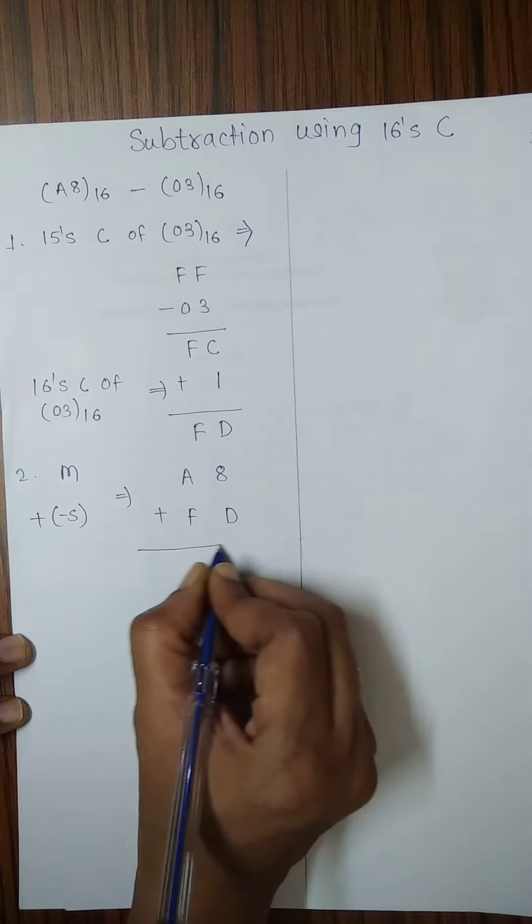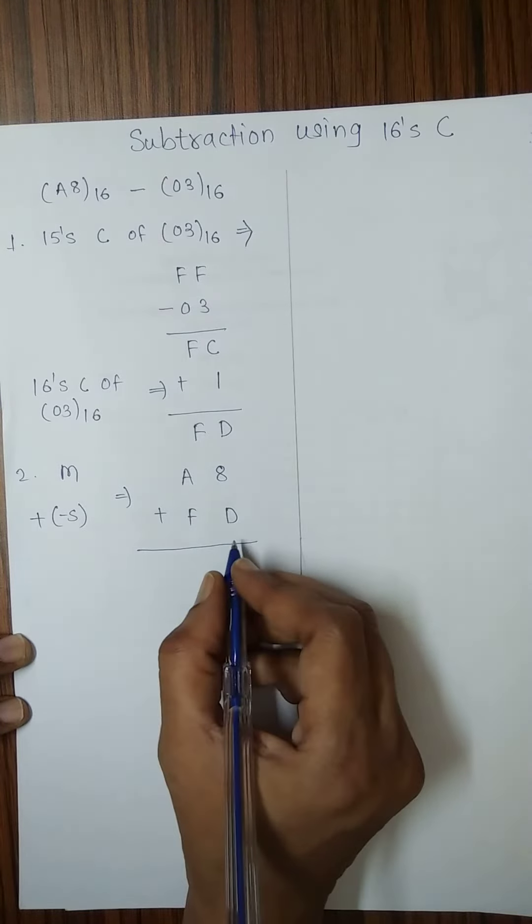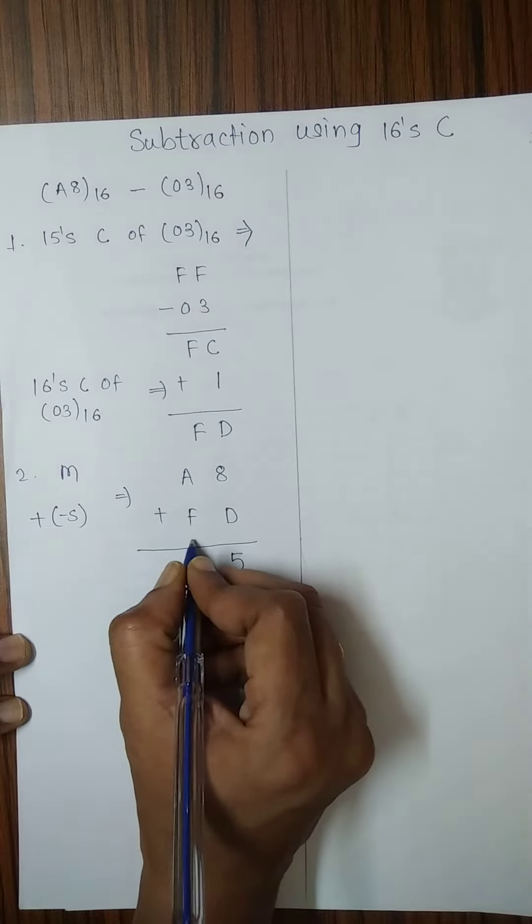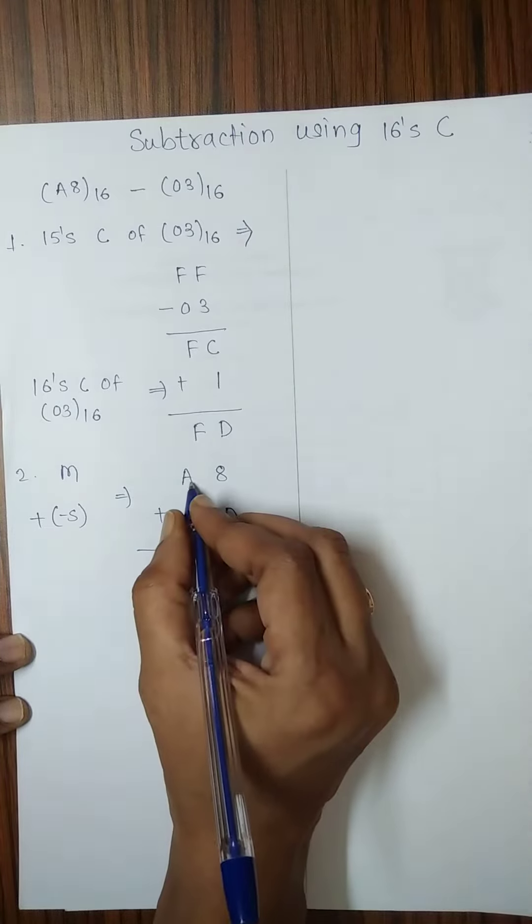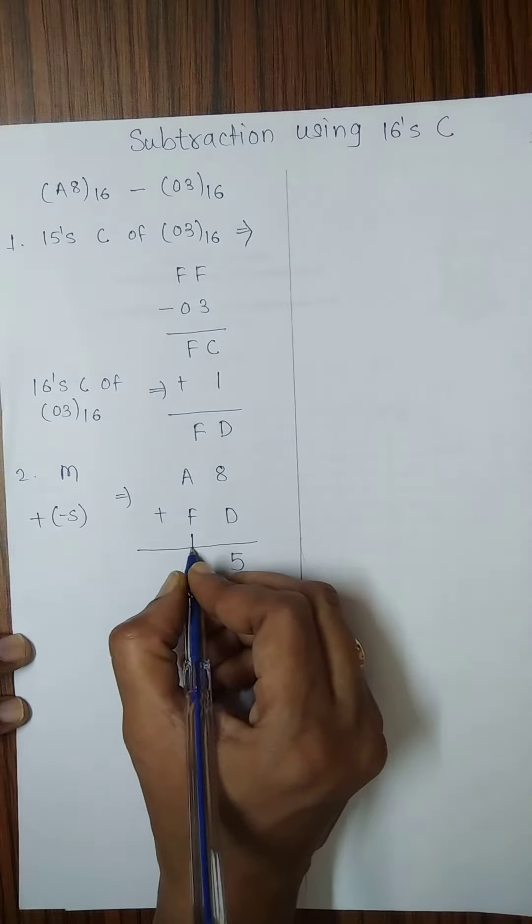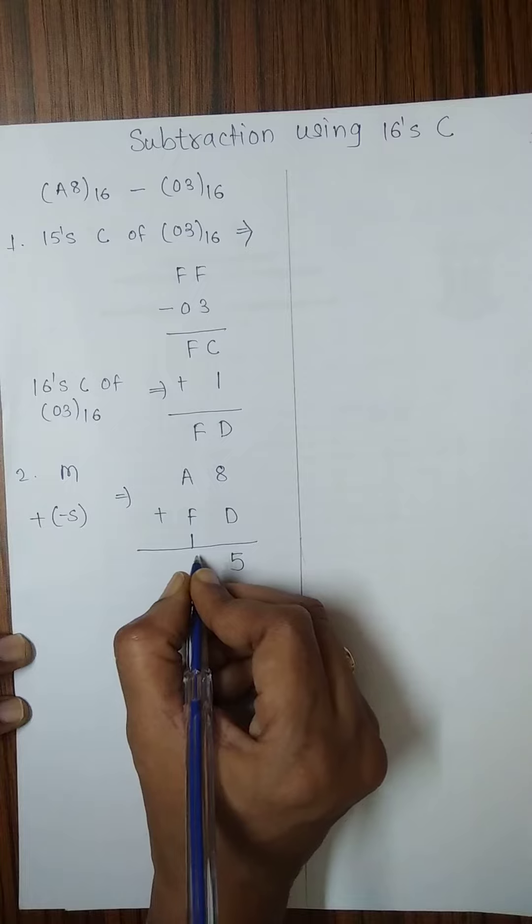we will get D plus 8 is 21. 21 modulus 16 is 5, whereas 21 divided by 16 carry is 1. A is representing 10. 10 plus 15 is 25 plus carry 1 is 26. 26 modulus 16 is 10.